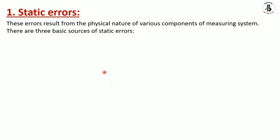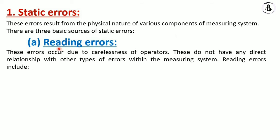Static errors result from the physical nature of the various components of the measuring system. There are three basic sources of static errors. The first and most common is reading error, which occurs due to the carelessness of an operator or unskilled persons. Reading errors have no direct relationship with other errors in the measuring system and depend on the skill of the operator.